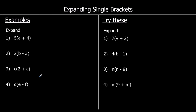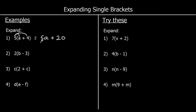Let's look at this first example. We're going to do 5 times a, which we write as 5a — we don't write a times sign in algebra, so 5a means 5 times a. Then we're going to do 5 times 4. It's a positive times a positive, so it's going to be a plus, and 5 times 4 is 20. So the answer is 5a plus 20.